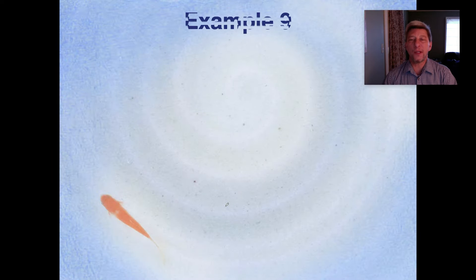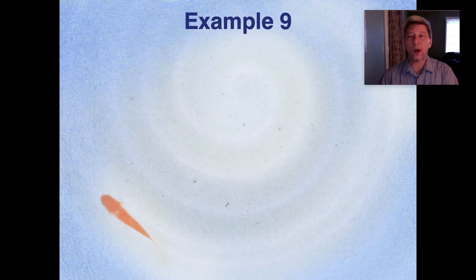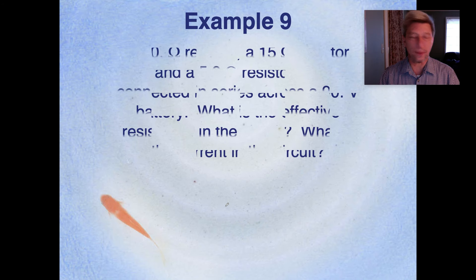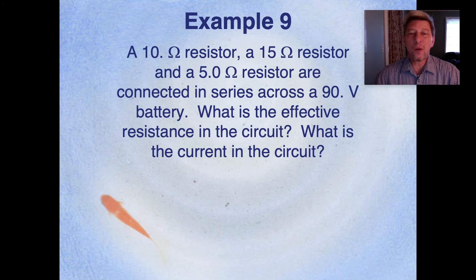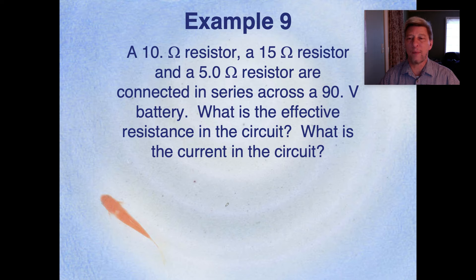So that brings us to example number nine. Now, this, again, is going to require me to do a little bit of drawing here. So please bear with me and my work here. But a 10 ohm resistor, a 15 ohm resistor, and a 5 ohm resistor are connected in series across a 90 volt battery. What is the effective resistance in the circuit? By that, I mean, what's the total resistance in the circuit? And what is the current in the circuit?